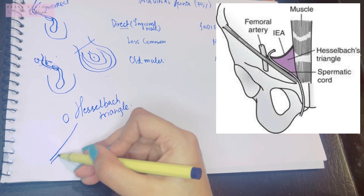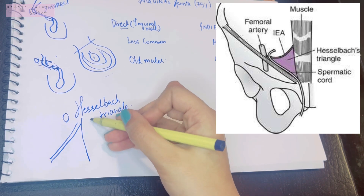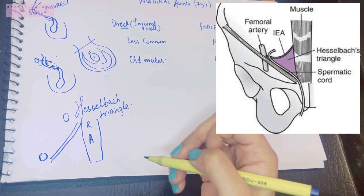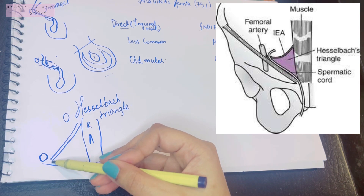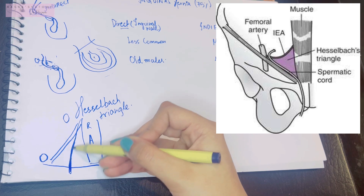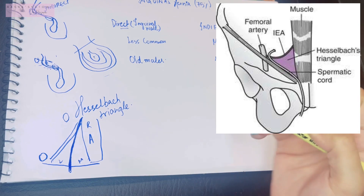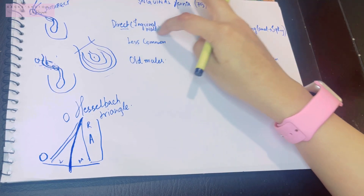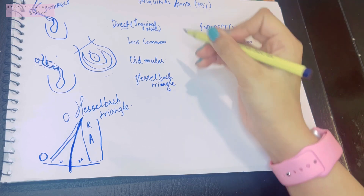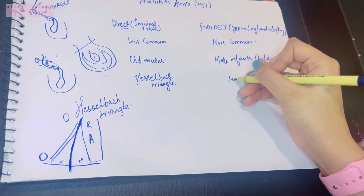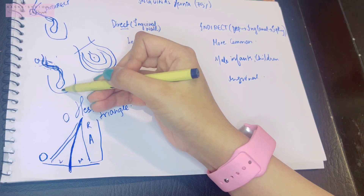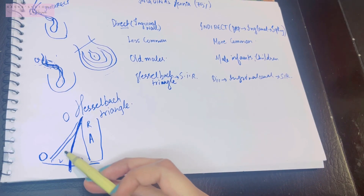The Hesselbach triangle is bounded laterally by the inferior epigastric artery, medially by the lateral border of the rectus abdominis muscle, and inferiorly by the inguinal ligament. The medial umbilical ligament — the obliterated umbilical artery — divides it into a lateral and medial part. It is through this Hesselbach triangle that a direct inguinal hernia occurs; it can occur through either the lateral or medial part.